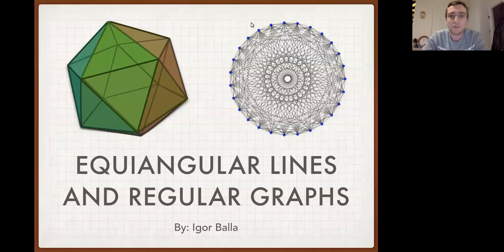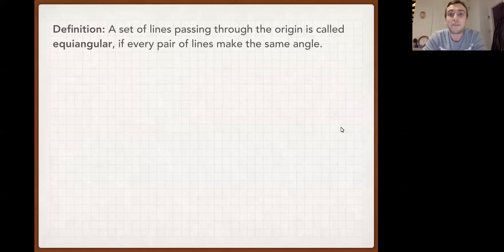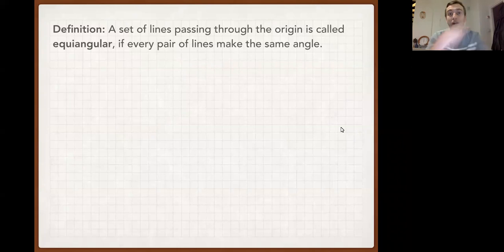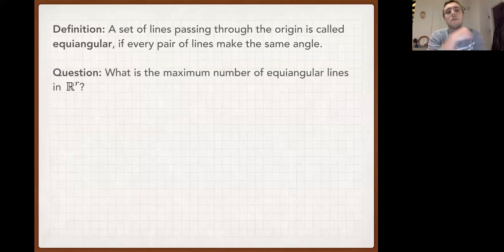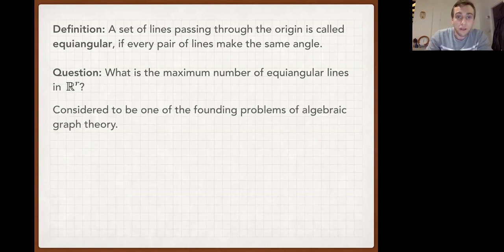Here I have a picture of both of these kinds of objects. A set of lines passing through the origin is called equiangular if every pair of lines makes the same angle — specifically, the acute angle between any pair is the same. The basic question is: what is the maximum number of equiangular lines you can have in R-dimensional Euclidean space?